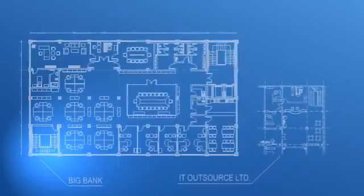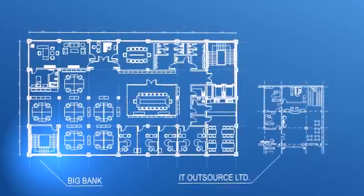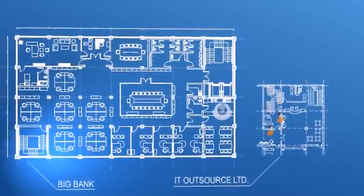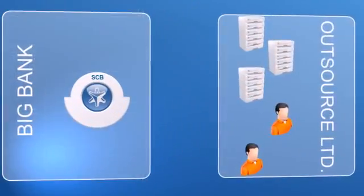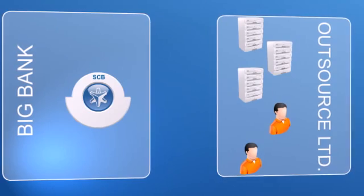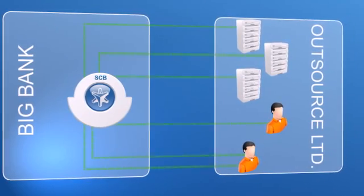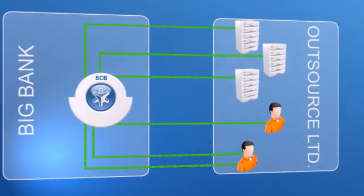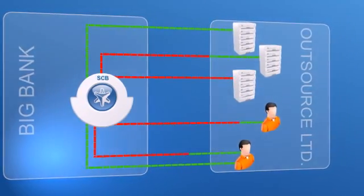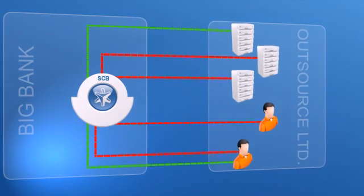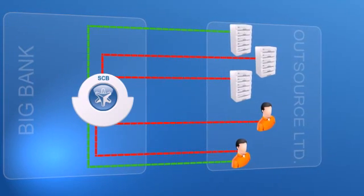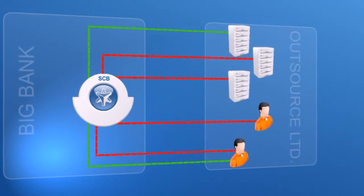What is SCB? SCB is an independent device that acts as a node in the network architecture. Each privileged access connection goes through this node. SCB is capable of limiting the possibilities of administrators, such as a firewall.